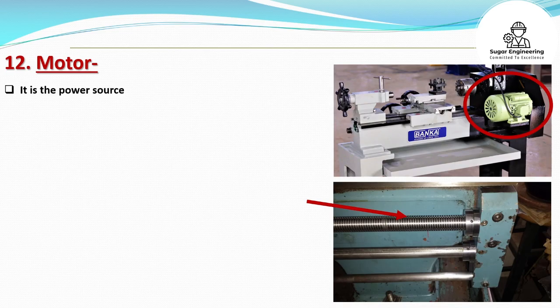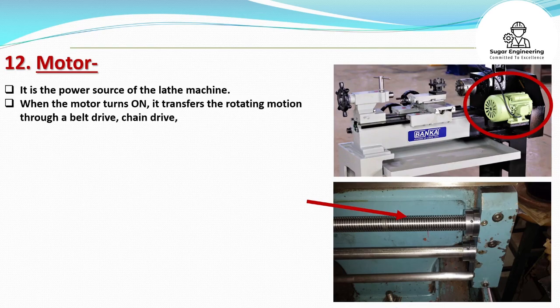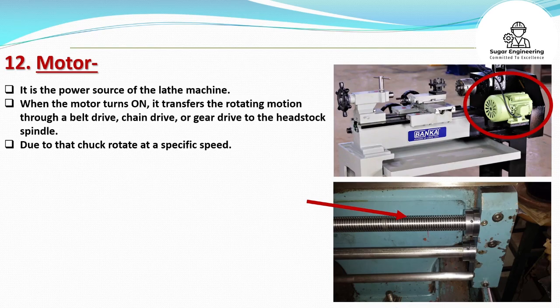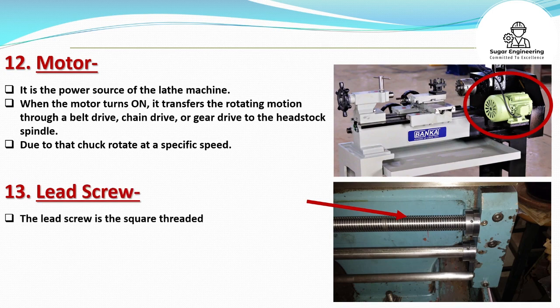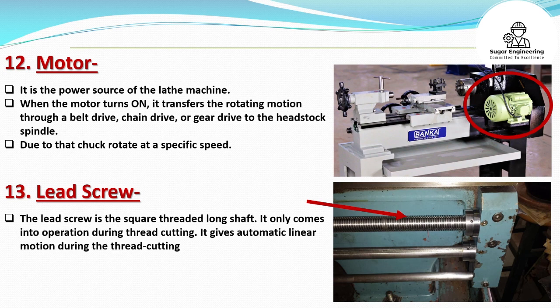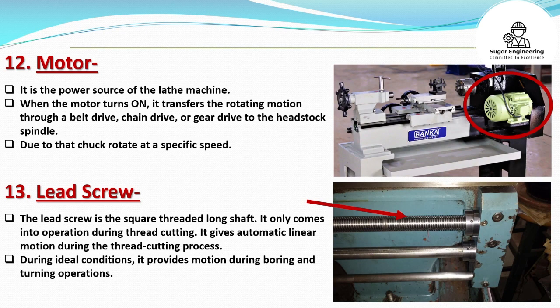The motor is the power source of the lathe machine. When the motor turns on, it transfers the rotating motion through a belt drive, chain drive, or gear drive to the headstock spindle, causing the chuck to rotate at a specific speed. The lead screw is the square threaded long shaft. It only comes into operation during thread cutting and gives automatic linear motion during the thread cutting process. During ideal conditions, it provides motion during boring and turning operations.